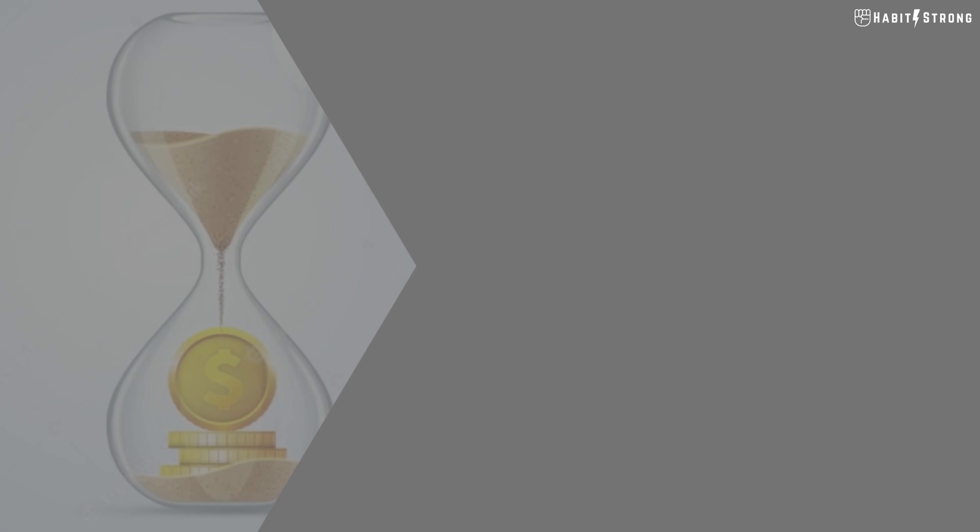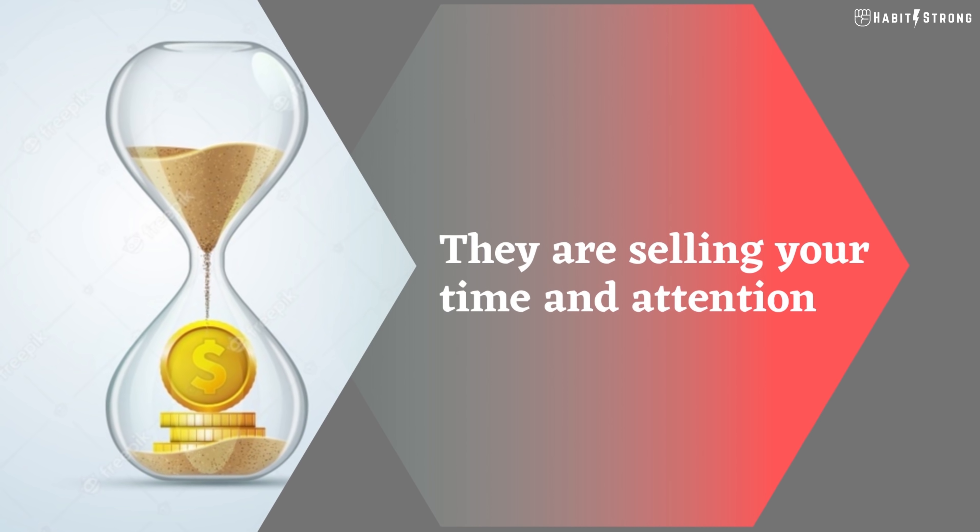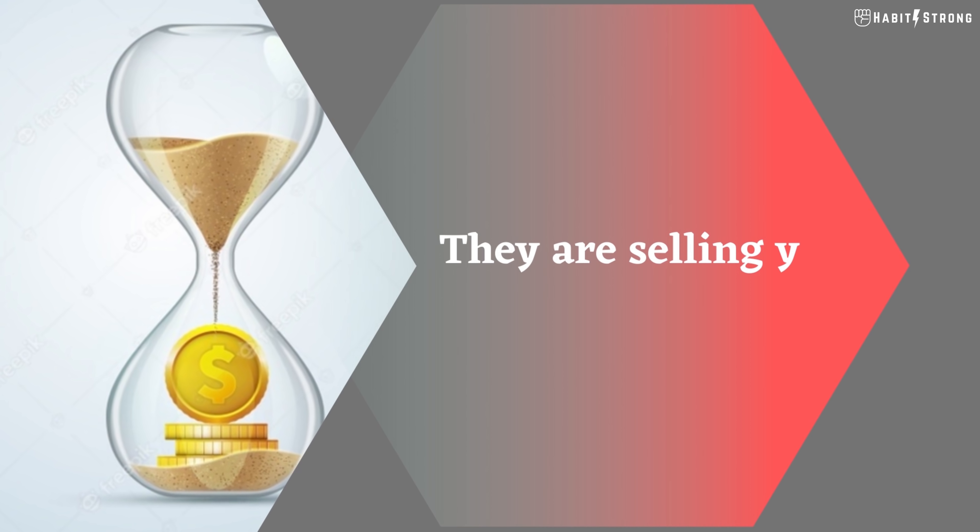If you're earning that much revenue, you have to be selling something. What are they selling? They are selling your time and attention. Every time you are on Facebook and you see an ad or click on an ad, Facebook is making money from advertisers. You could have spent 20 minutes playing with your kid or working on something meaningful, but instead you spend those 20 minutes on Facebook — and Facebook gets richer. That's how it works.